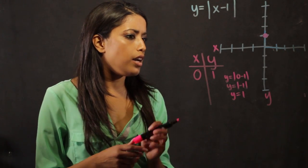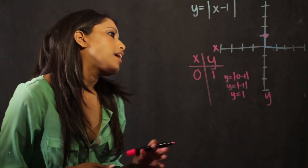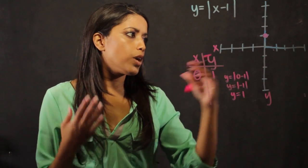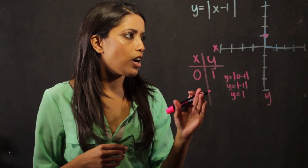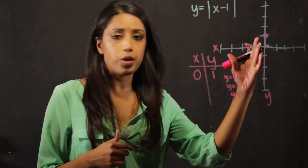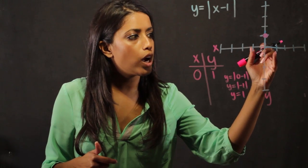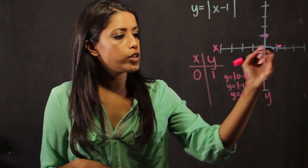Next, we want to pick another point on our graph. Generally, you want to go to the right and to the left of the point you have. So I'm going to pick 1 and minus 1. First, let's do 1.